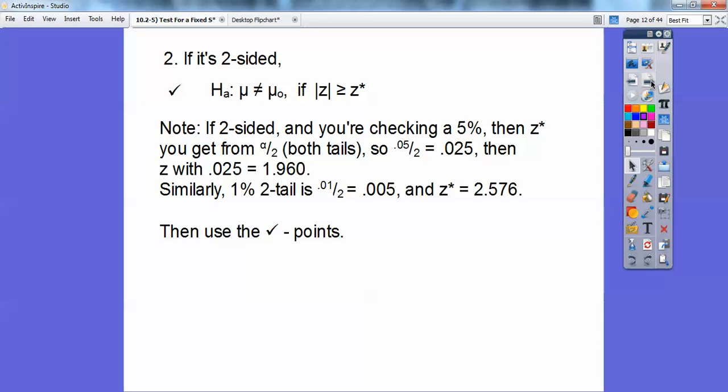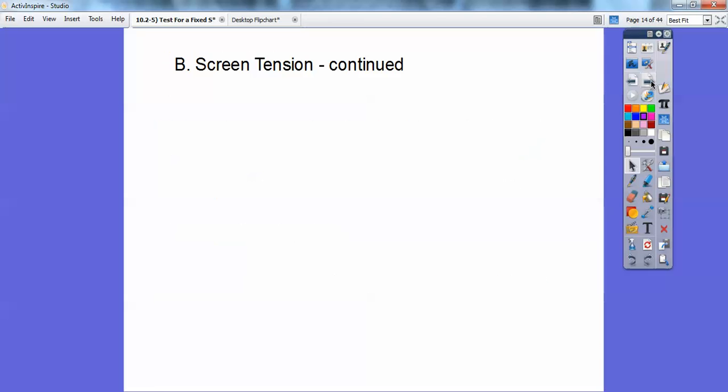All right, let's go ahead and try some of this. So then you just use those checkoff things that you just checked off, okay? So but if it's one-sided, then look for the 0.05 and the 0.01 for those, okay? If it's two-sided, you've got to divide it by 2. If it's one-sided, then you don't. Okay, so back to the screen tensions.